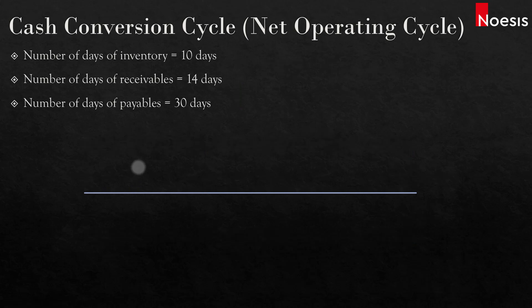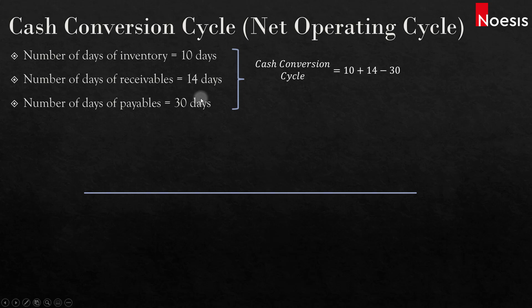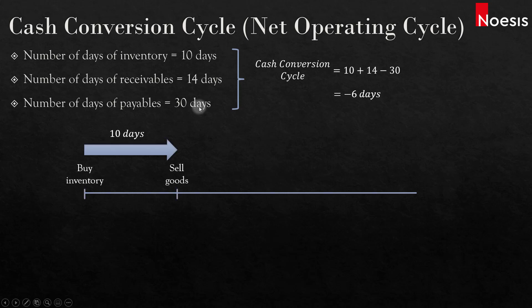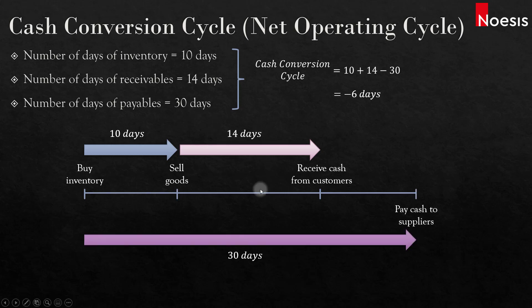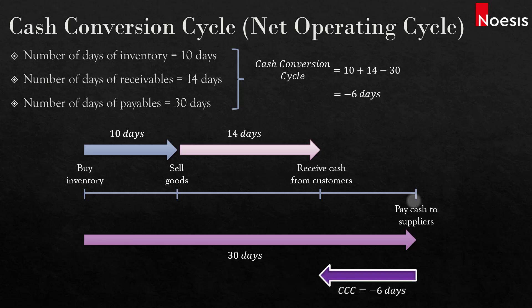In the last example, the number of days of inventory is 10 days, the number of days of receivables is 14 days, and the number of days of payables is 30 days. Using the formula, the cash conversion cycle is 10 plus 14 minus 30, giving us negative 6 days. On the timeline, it takes 10 days to sell the goods and another 14 days to receive cash from customers, so the operating cycle is 24 days. But the supplier gives a credit term of 30 days, so we pay the supplier on day 30. This means we receive cash from customers first, and then 6 days later we pay cash to suppliers — hence the negative 6 days.